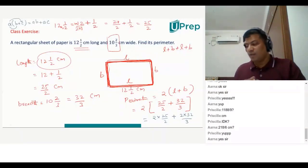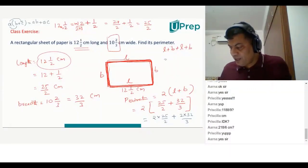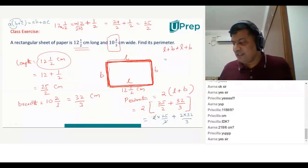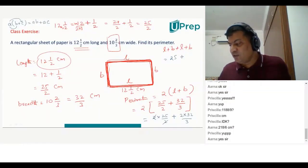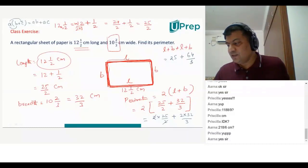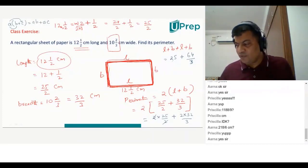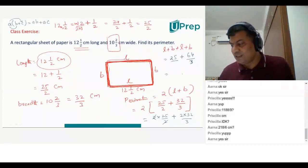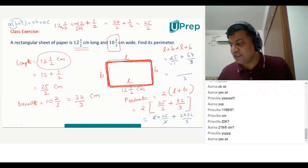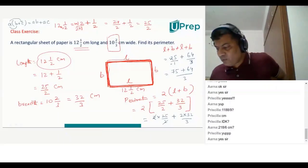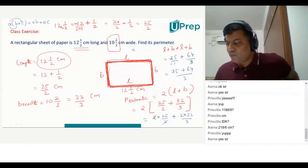Simplifying: 2 into 25 by 2 — the two 2s cancel — giving 25. Then 2 into 32 is 64, divided by 3. Now to add 25 and 64 by 3, take the LCM which is 3. Multiply 25 by 3 to get 75, plus 64, all over 3. So 75 plus 64 is 139, giving a final answer of 139 by 3.